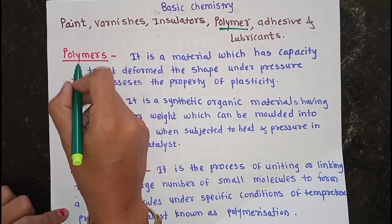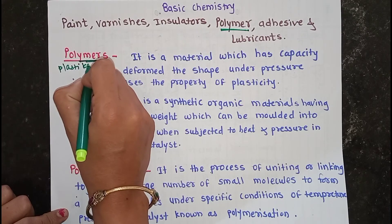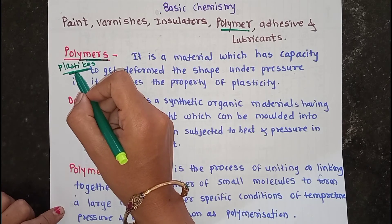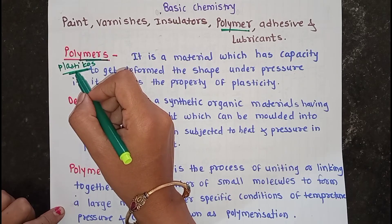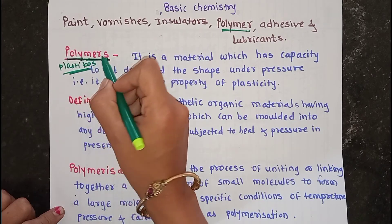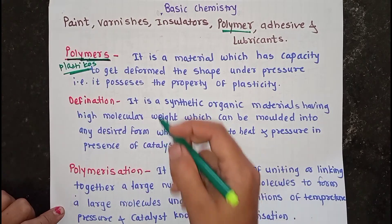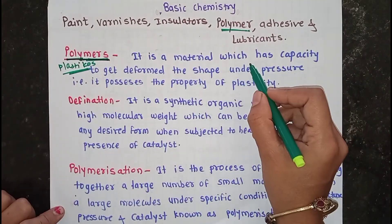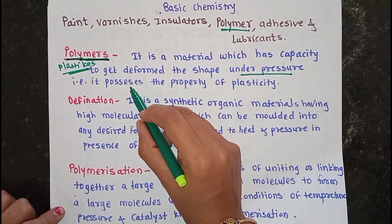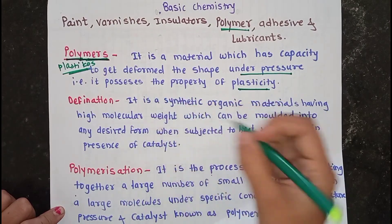This word 'polymer' is obtained from the Greek word 'plasticos'. Plasticos means 'fit for molding'. Also, polymer means: 'poly' means many and 'mers' means unit. So a large number of units unite together to produce polymers. It is a material which has the capacity to get deformed in shape under pressure, meaning it possesses the property of plasticity.